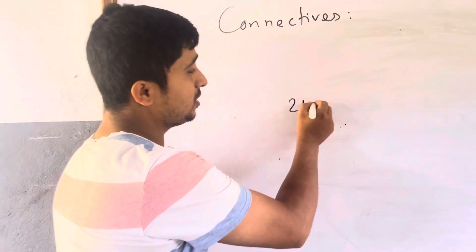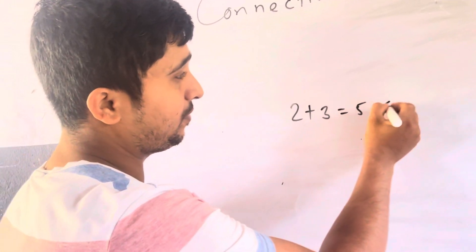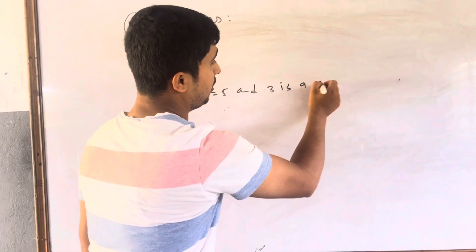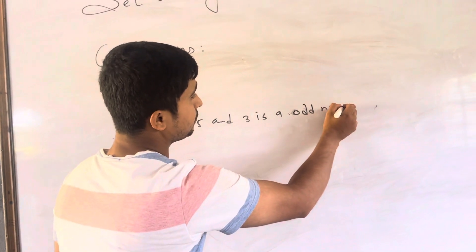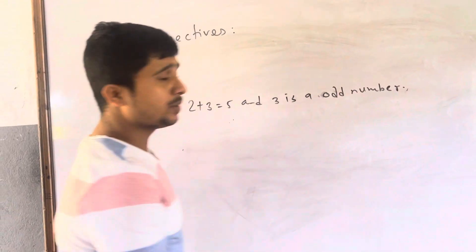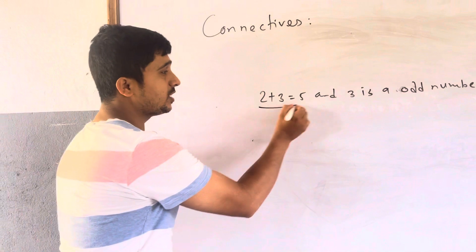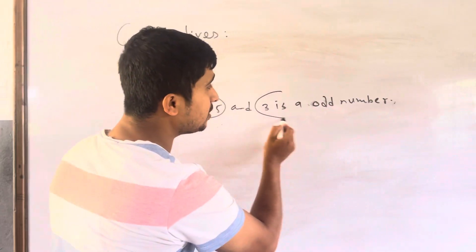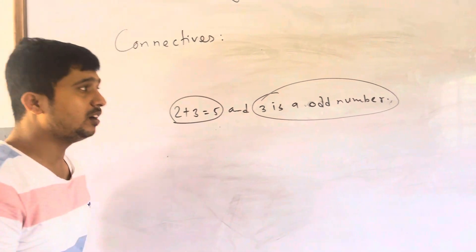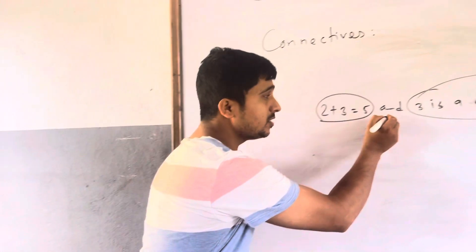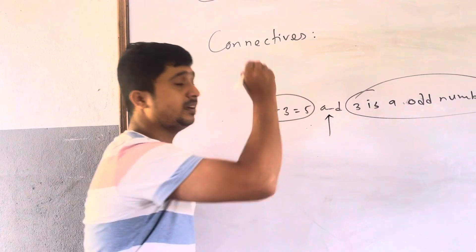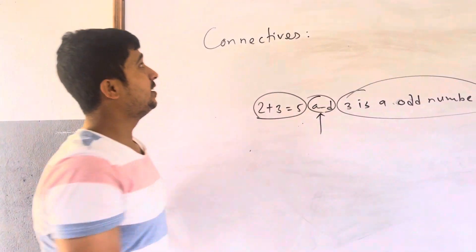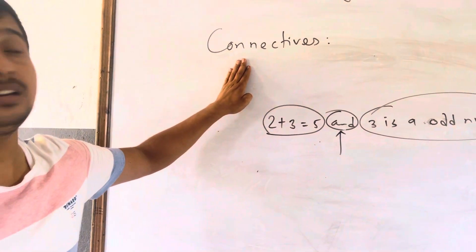For example, if I write '2 plus 3 equals 5' and '3 is an odd number' — here we have one statement, '2 plus 3 equals 5', and another statement, '3 is an odd number'. I connect these two statements by AND. So AND is a mathematical connective.